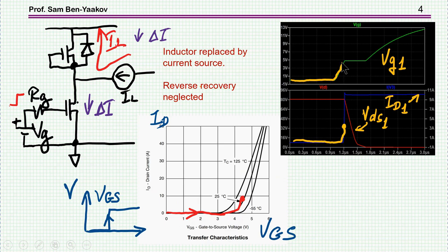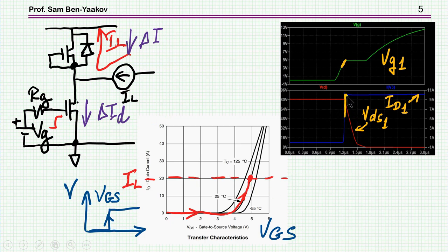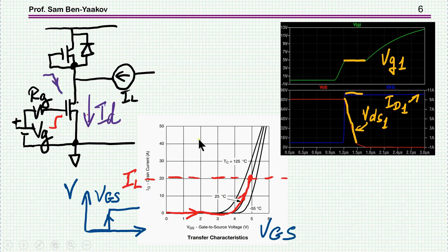The current starts going up — this is at different temperatures — and we see that as we go up with the gate voltage, drain current is starting to rise. Still we don't see any change in VDS. Next step: we have reached the inductor current, and at this point the current through the diode is actually dropping to zero because the transistor is pulling all the inductor current. We are now at the edge of this flat portion.